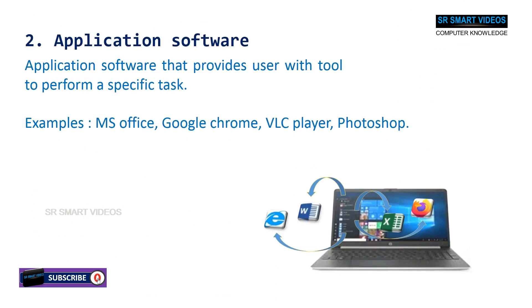Application software provides the user with tools to perform a specific task. Some examples of application software are MS Office, Google Chrome, VLC Player, and Photoshop.